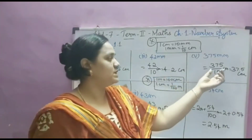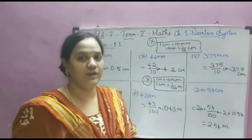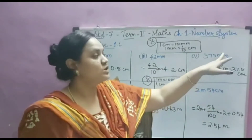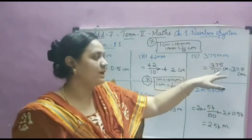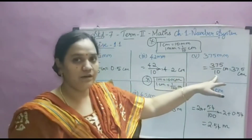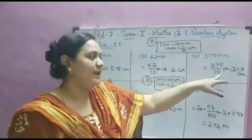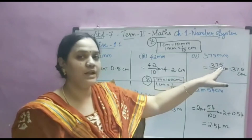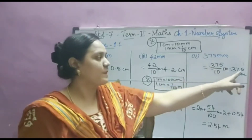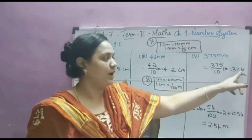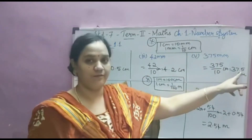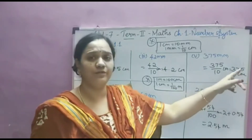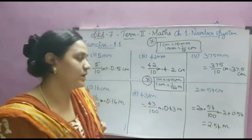For 375 millimeters, I am dividing by 10. While dividing by 10, I have to keep the point before one digit. So I kept the point before 5, and 37.5 is the answer.